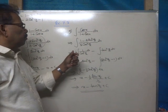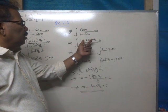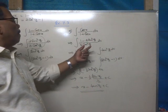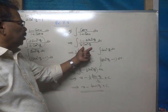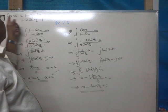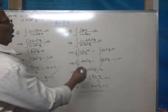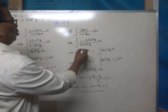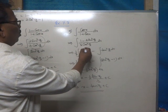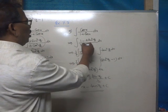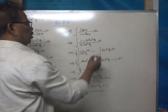Question number 9: integrate cos x/(1 + cos x). This cos x can be written as 1 - 2sin²(x/2) and 1 + cos x as 2cos²(x/2). Splitting the fraction gives half into [1/cos²(x/2) - 2sin²(x/2)/cos²(x/2)], where sin²(x/2)/cos²(x/2) is tan²(x/2).